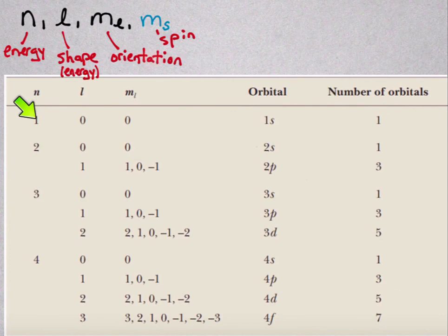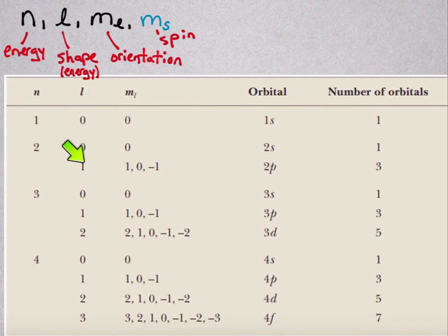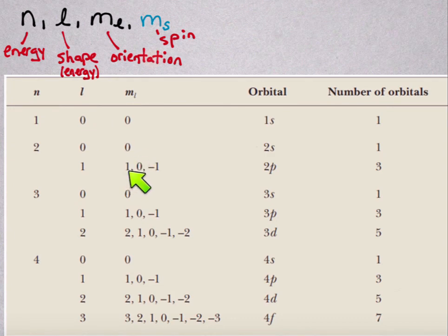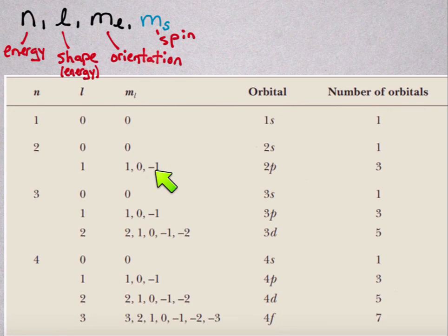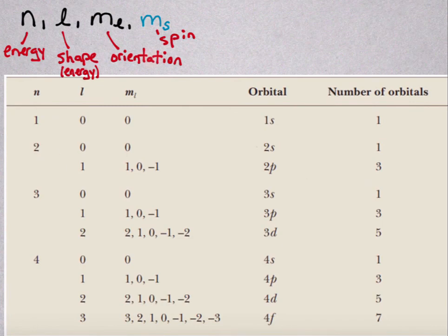Energy levels are called shells, so we have the first, second, third, and fourth shells. Within a shell, the orbital types are called subshells — at the second level, for instance, we have the s subshell and the p subshell. The ml values describe the specific orbitals: a 1s orbital, a 2s orbital, and then three different p orbitals — pz, px, and py — aligned along the z, x, and y axes. This leads to the increasing number of orbitals per shell as the energy level increases.